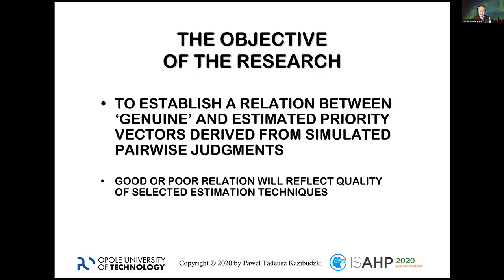The basic objective of the research was to establish a relation between some so-called genuine and estimated priority vectors derived from simulated pairwise judgments. By 'genuine' I mean priority vectors that we can compute on the basis of physical attributes of some objects — like for example, Tom Saaty did once with figures that were judged by a group of people, where the relative attributes of those figures could be computed from physical measurements.